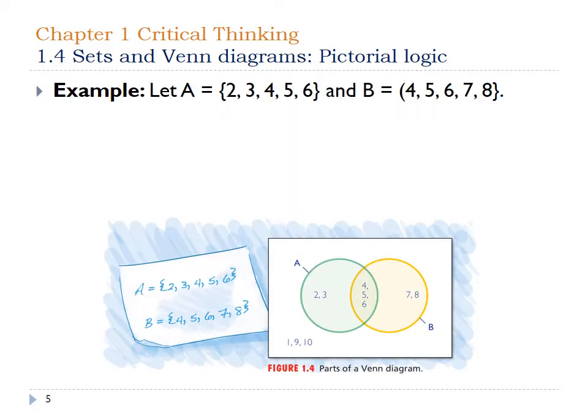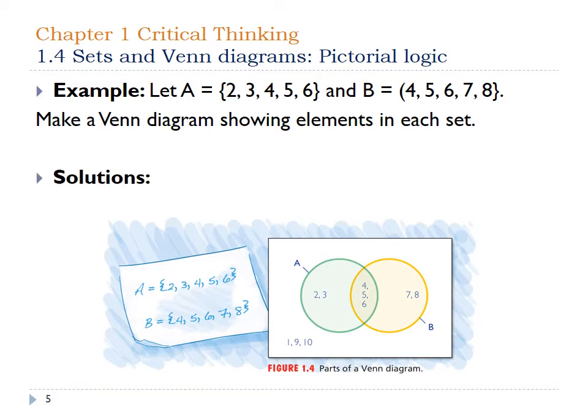Here's an example. A is {2, 3, 4, 5, 6} and B is {4, 5, 6, 7, 8}. If we look at the Venn diagram at the bottom, set A — all inside the green circle — and set B — all inside the yellow circle — there is an overlap of 4, 5, 6, which are in both sets, so those are where the two circles overlap. Also notice that 1, 9, and 10 aren't part of either set, so those are outside of the Venn diagram entirely.